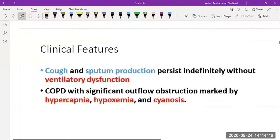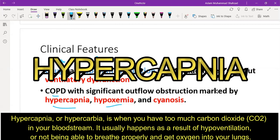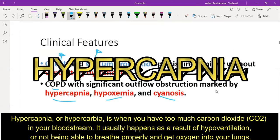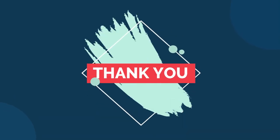The clinical features include production of cough and sputum that persist indefinitely without ventilatory dysfunction, with the production of sputum being more prominent. It can result in chronic obstructive pulmonary disease, marked by hypercapnia, hypoxemia, and cyanosis. Thank you so much for today's lecture; hope to see you again.